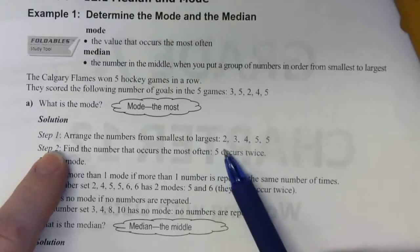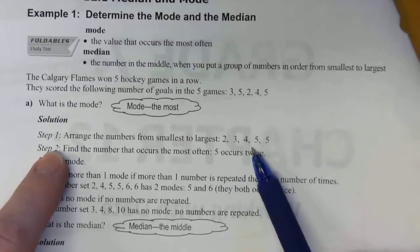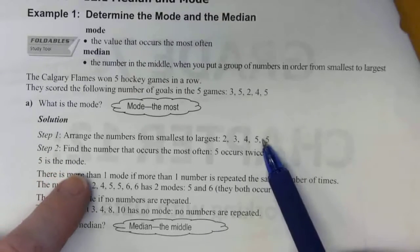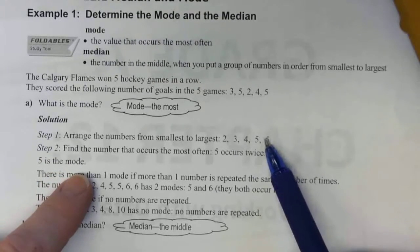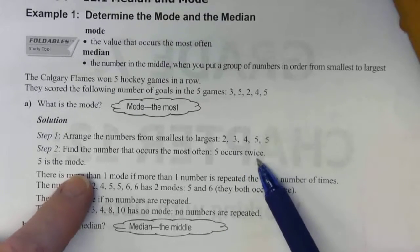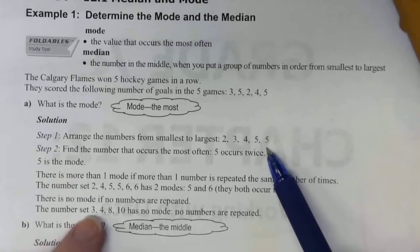We can start by arranging the numbers from smallest to largest. So we take these five numbers and sort them: 2, 3, 4, 5, and 5. Once you've got them sorted, it's really easy to spot anything that's got duplicates. In this case, the number five is duplicated twice, and it's the only number that has a duplicate. So that makes five the mode.